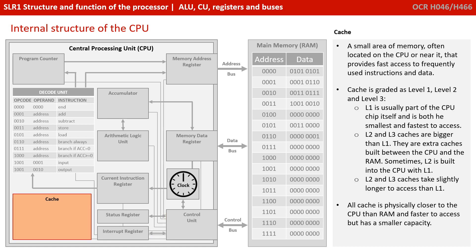Finally, we have cache. This is a small area of memory, often located on or inside the CPU or very near it, and it provides fast access to frequently used instructions and data, just like the general purpose registers. Cache is typically graded as level 1, 2 or 3, and depending on the level, depends on the speed of access. All cache is physically closer to the CPU than RAM and faster to access, but the downside is it has a much smaller capacity.